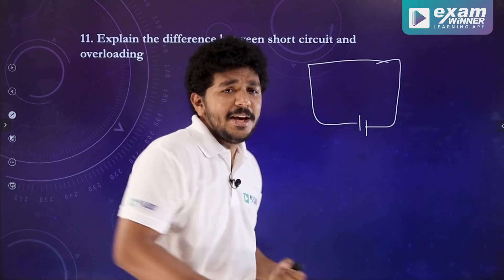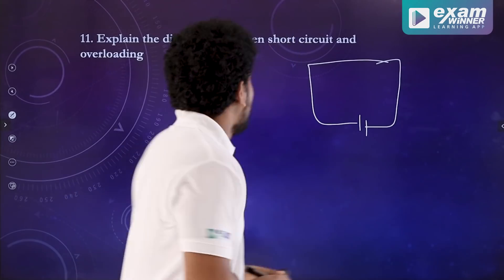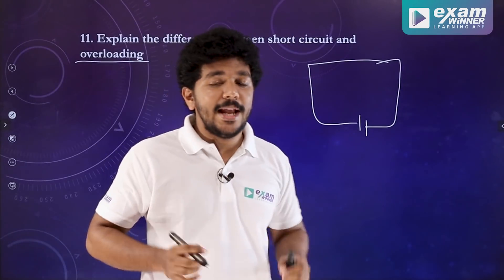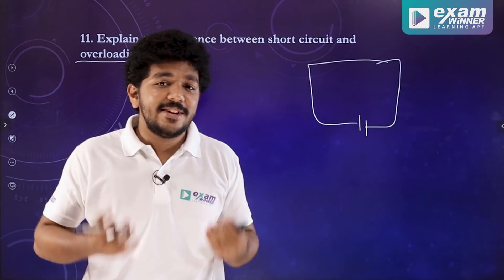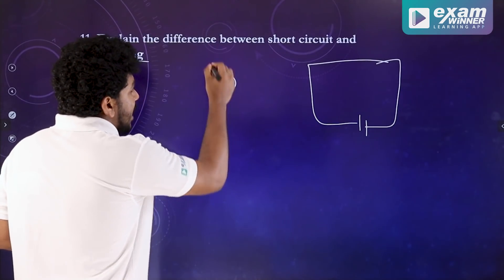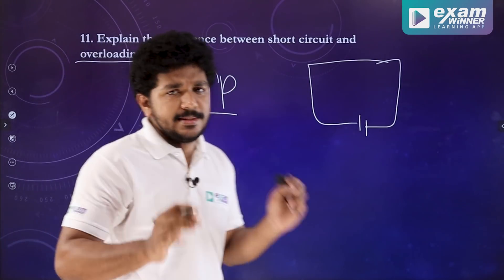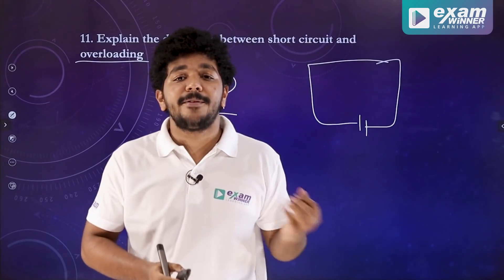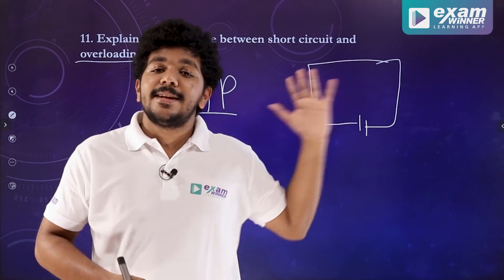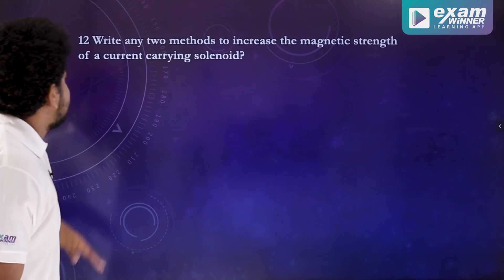If you shoot the current in the resistance, that is short circuit — because it has least resistance. What is overloading? If you have excess power in the circuit, this is overloading. If power input exceeds, it is overloading.